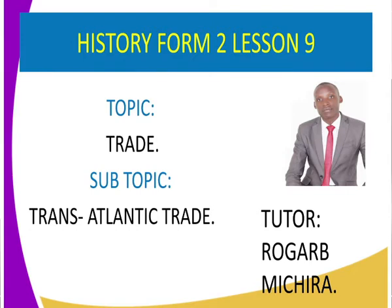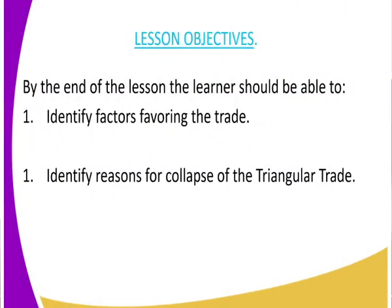Very good — we did look at transatlantic trade and the factors that facilitated its development and origin. Now today, what we need to learn by the end of the lesson: we need to look at what are some of the factors that favored the transatlantic trade, and also why did the transatlantic trade collapse.